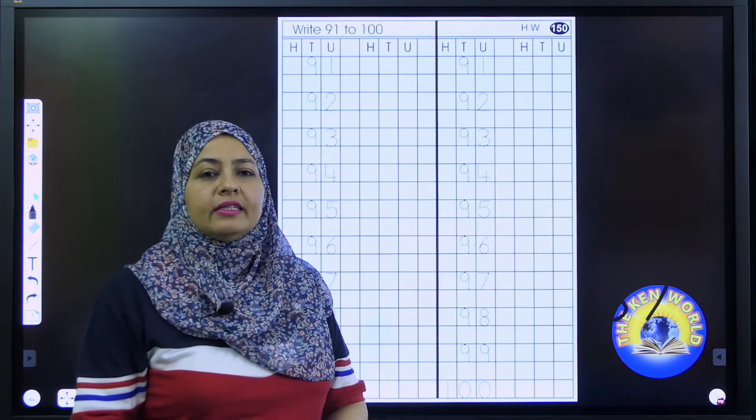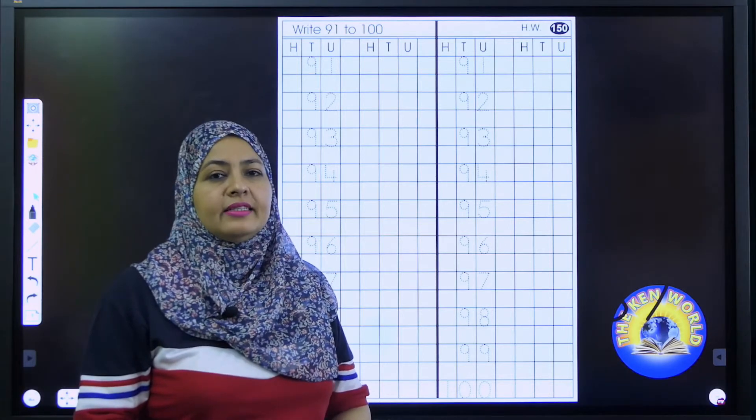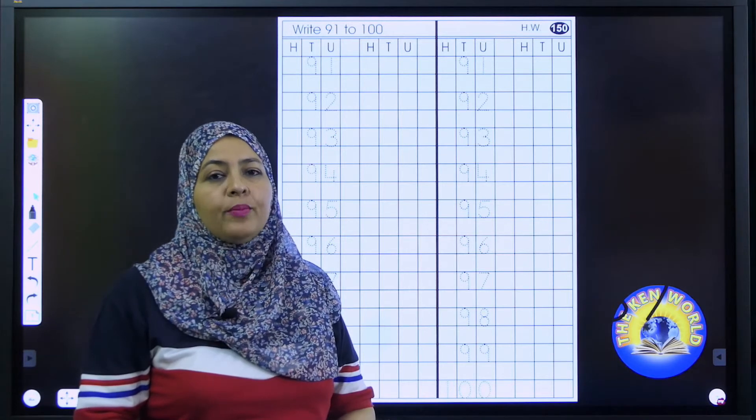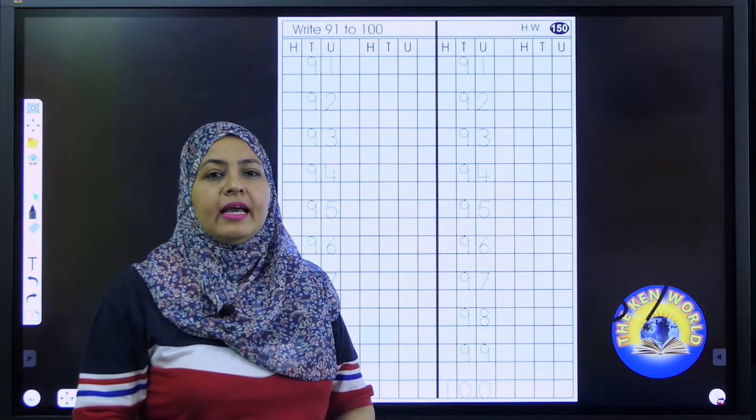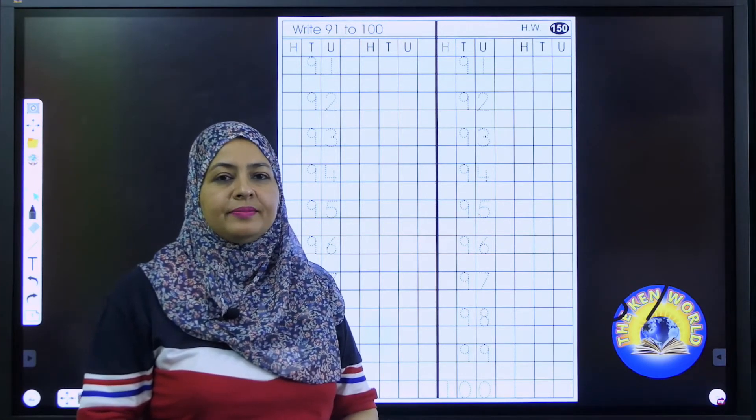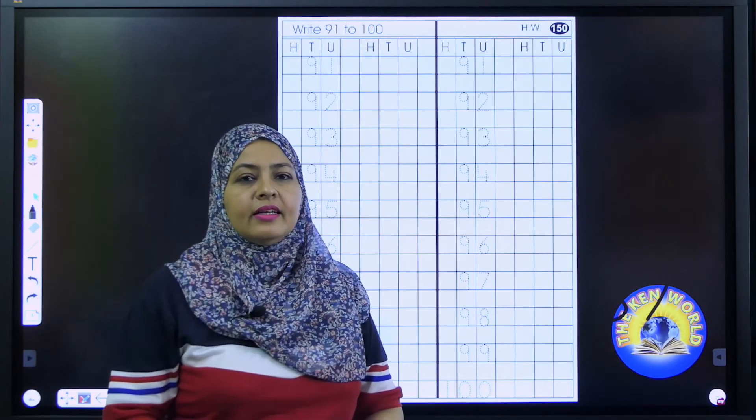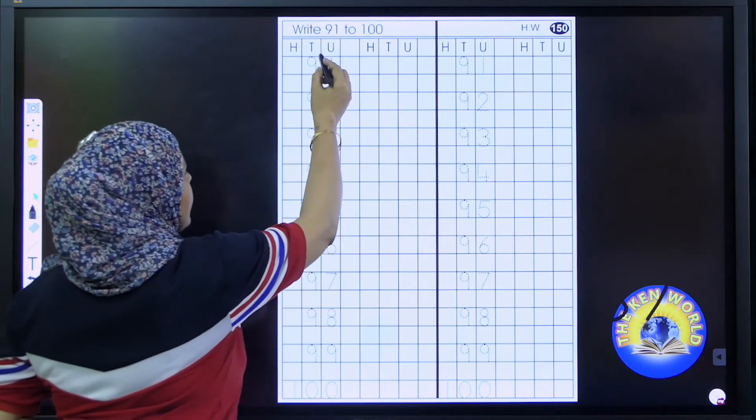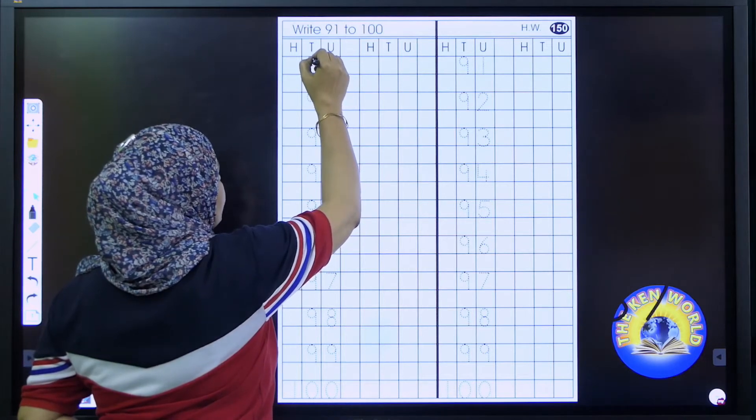Today we will learn counting from 91 to 100. Are you ready? Then sit properly with your back straight. Don't look here and there until you complete your work. And take out your sharpened pencil and eraser. Shall we start? Now write with me. First we will trace them. Then we will write without dots. Start with 91.